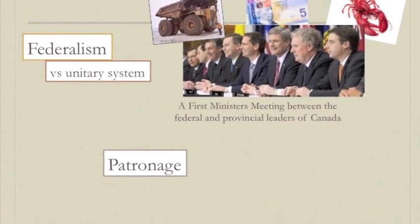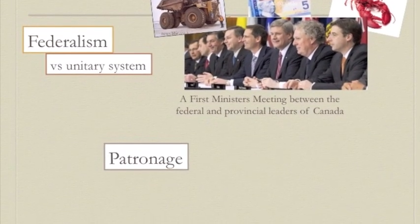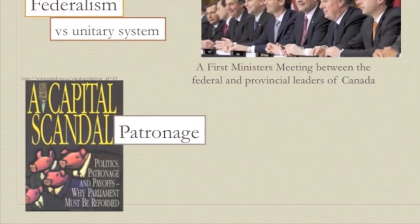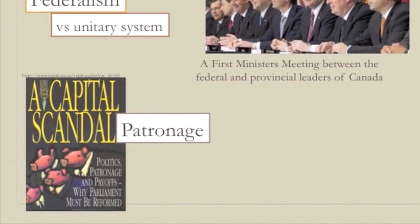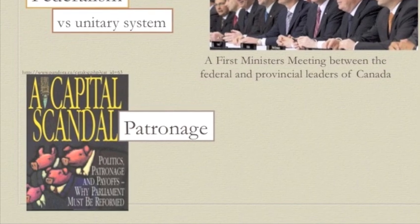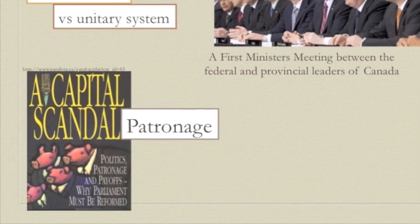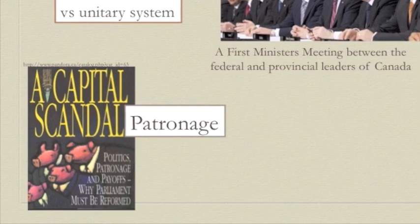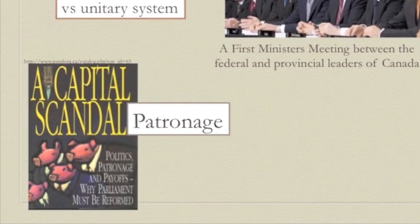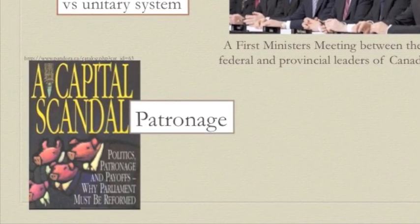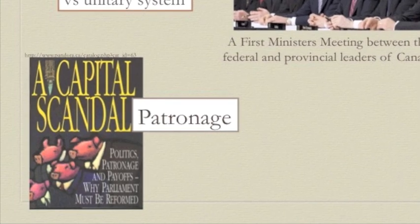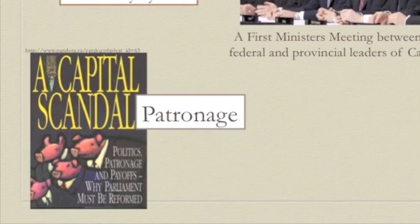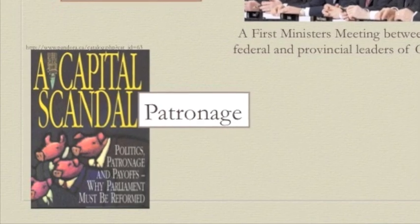Patronage is another term used in both systems — that's when you grant favours to people who have supported you. There are different opinions on patronage. Some see it as only natural that you would favour your supporters. But individualists say that everyone should be treated equally in a society regardless of who supported your election campaign. That's why in Canada, the individualist province of Alberta has always shown the least support for patronage compared to provinces in eastern Canada, especially Atlantic Canada, which used to have pretty blatant patronage in the 1960s.